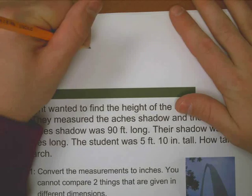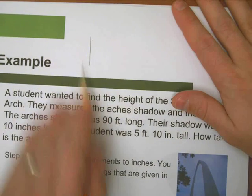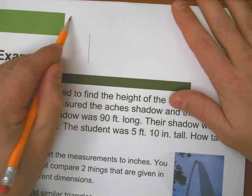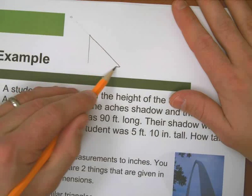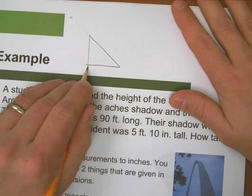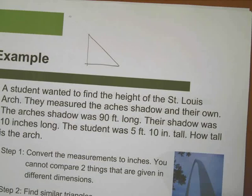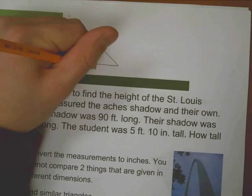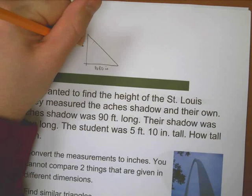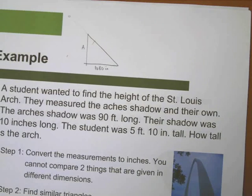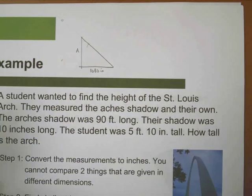Here's the idea. Here's the arch - a side view of the arch. The sun's up here and it's going to cast a shadow. When it casts a shadow on the ground, the shadow is 90 feet long. Let's go ahead and take 90 times 12, and that gives us 1,080 inches. So here's the height of the arch - we'll call that capital A for arch. Now we're going to do the same thing for the student.